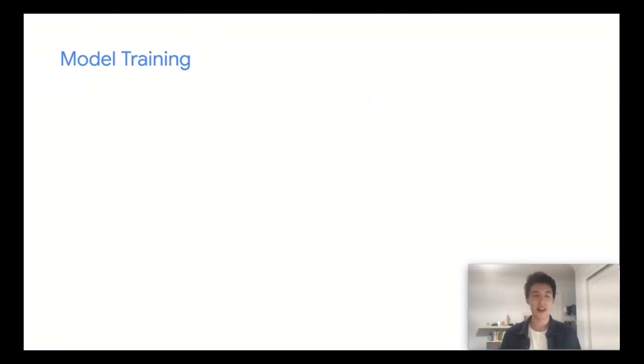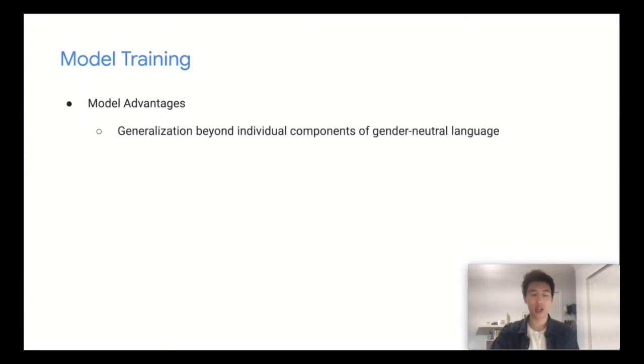As a heads up, the algorithm is not perfect. There can be underlying mistakes in the dependency parser and language model which can contribute to errors. The advantage of training a model is that it can generalize beyond individual components of gender-neutral language, especially if it picks up concepts like grammar and sentence syntax. It also doesn't hurt that we're replacing multiple steps with one step.